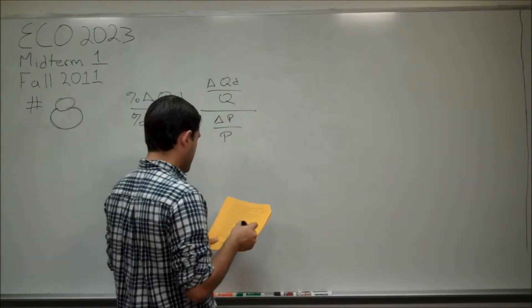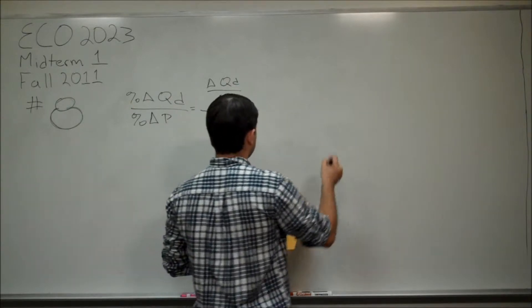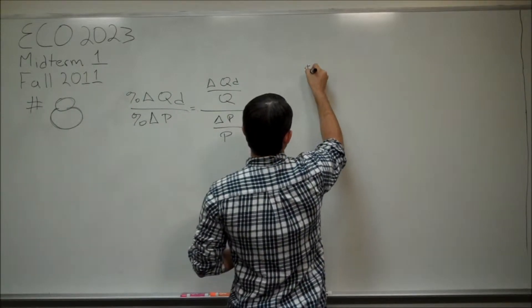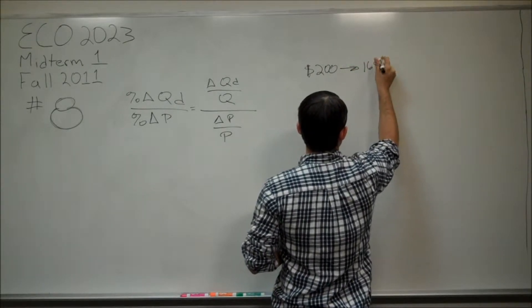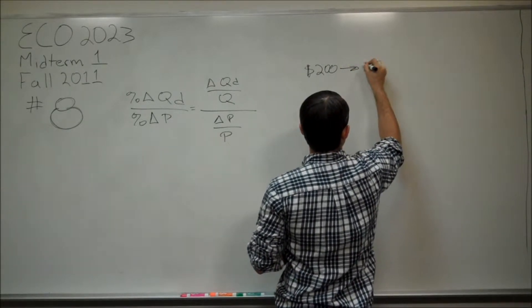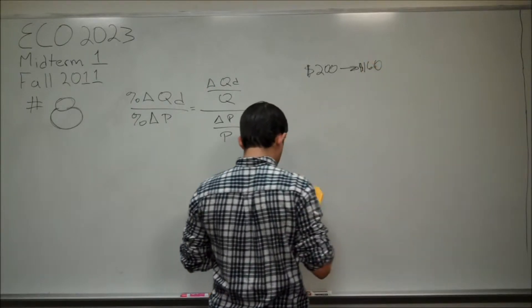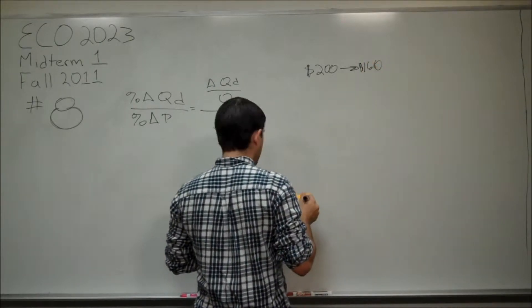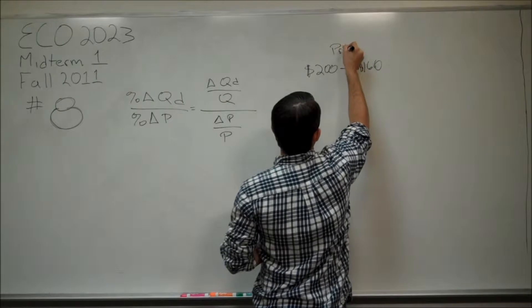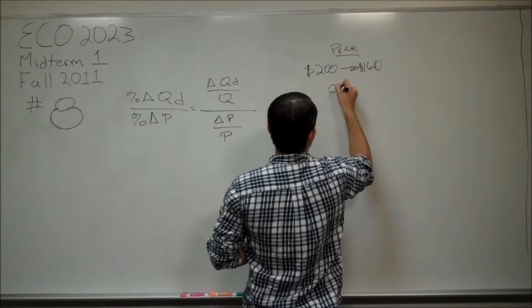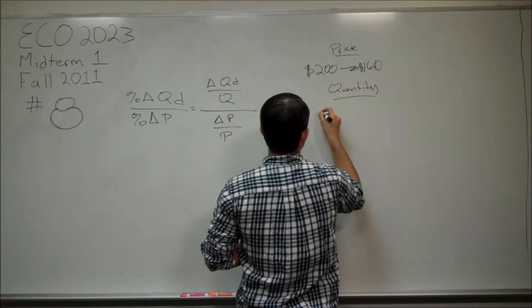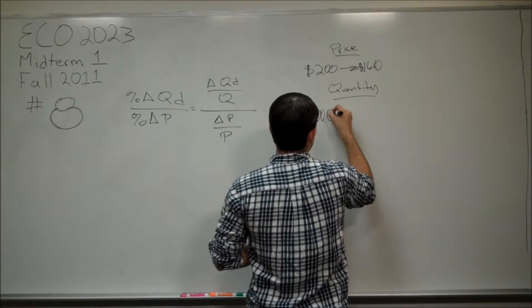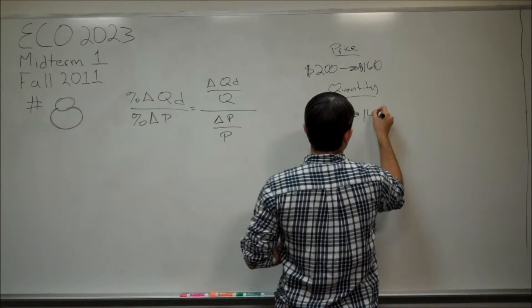So, for instance, here we have the price changing from $200 to $160. And you have the quantity going from 1,000 to 1,400.